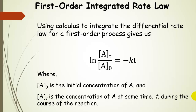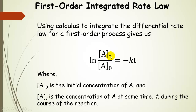After we use calculus to integrate the differential rate law for a first order process, we get this: the natural log of the concentration of A at time T divided by the initial concentration of A is equal to the negative of the rate constant times time. A-sub-nought is the initial concentration of A, and A-sub-T is the concentration of A at some time T during the course of the reaction.